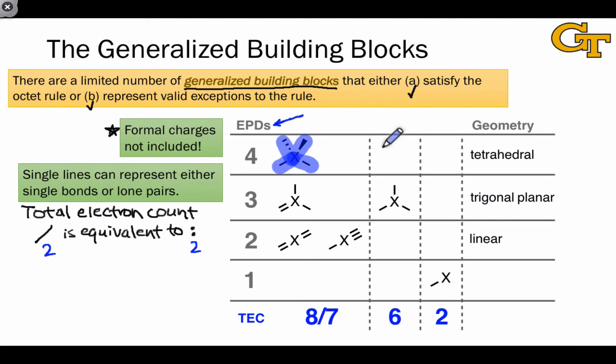When we get to three electron pair domains, the situation gets somewhat more interesting because we can either have a situation where the atom has an octet of electrons involving a double bond and two single bonds, and that's what's shown on the left here.